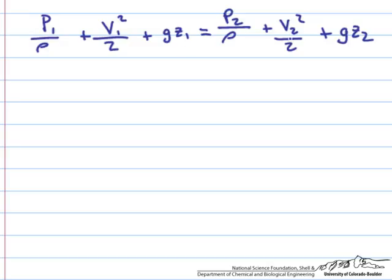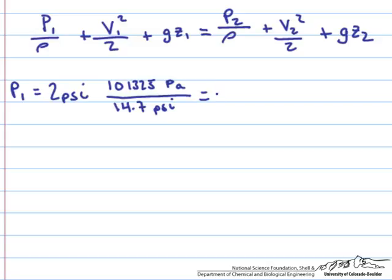Now let's evaluate all the terms that we know in this equation. We know P one is equal to two PSI. If we convert all our units to SI units, it'll make the problem go a little bit easier. We'll do the conversion that 101325 pascals, the SI unit of pressure, is one atmosphere and 14.7 psi is also one atmosphere. This will convert us to pascals, and this is equal to 1.38 times 10 to the fourth pascals. P two is just equal to the atmospheric pressure, so in this case P two will be equal to zero.